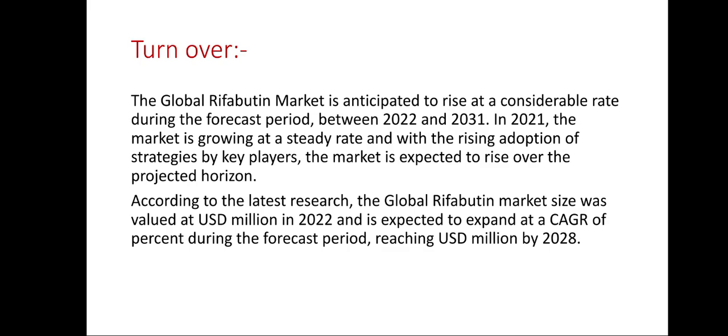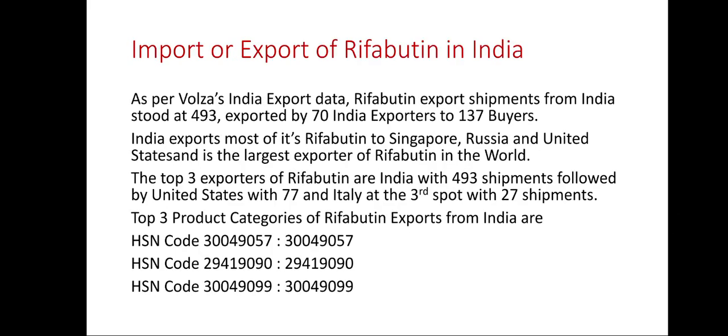According to the latest research, the global rifabutin market size was valued at USD million in 2022 and is expected to expand at a CAGR of a certain percent during the forecast period, reaching USD million by 2028. As per Volza India export data, rifabutin export shipments from India stood at 493, exported by 70 Indian exporters to 137 buyers. India exports most of its rifabutin to Singapore, Russia, and the United States, and is the largest exporter of rifabutin in the world. The top three exporters are India with 493 shipments, followed by the United States with 77, and Italy with 27 shipments.